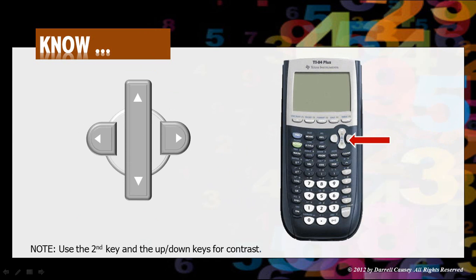Our keys over on the side which are the keys that we use for moving forward and backward and up and down. And also you can do the second key and use the up and down arrow to control the contrast.